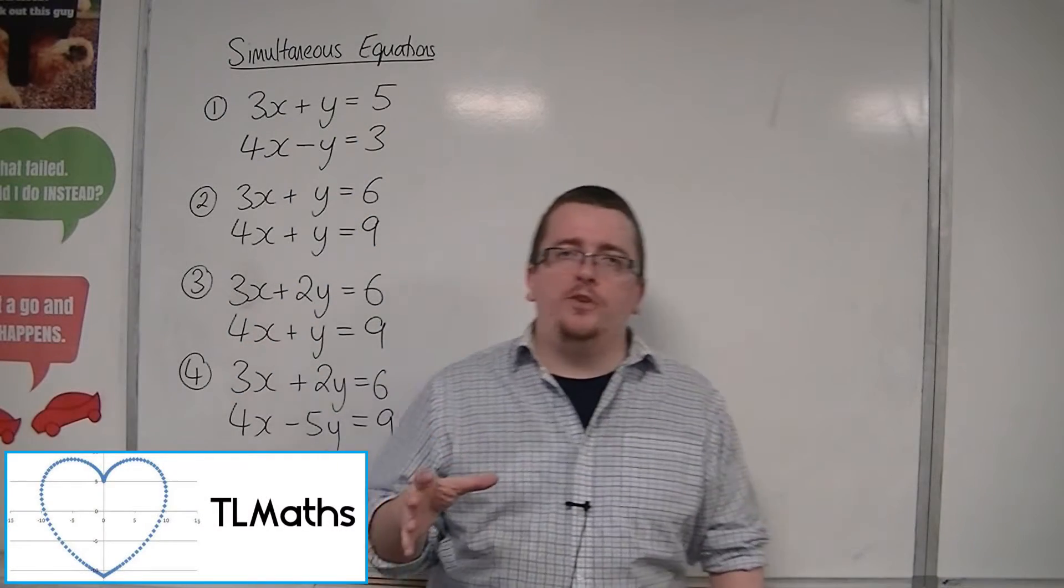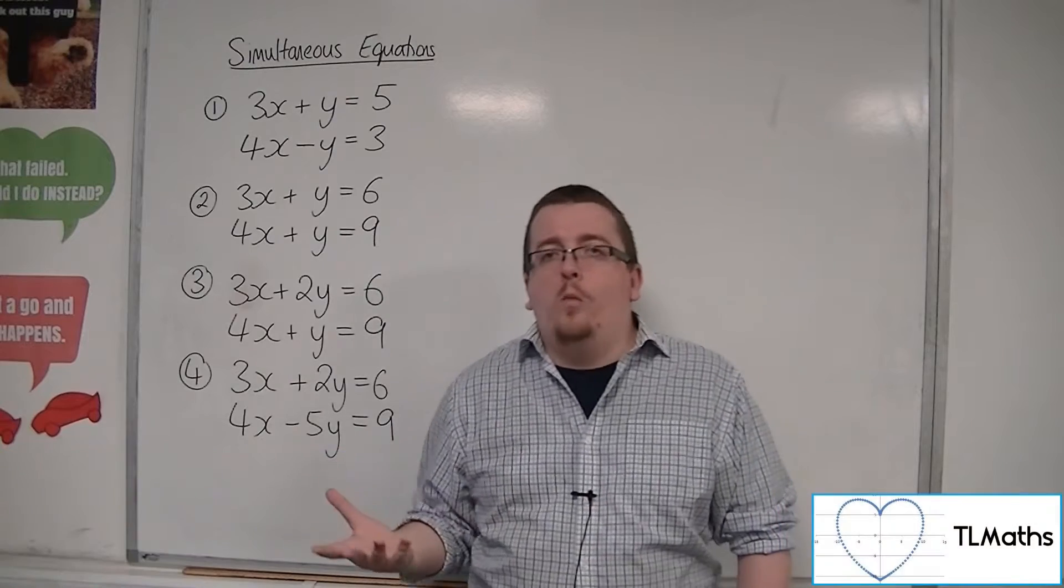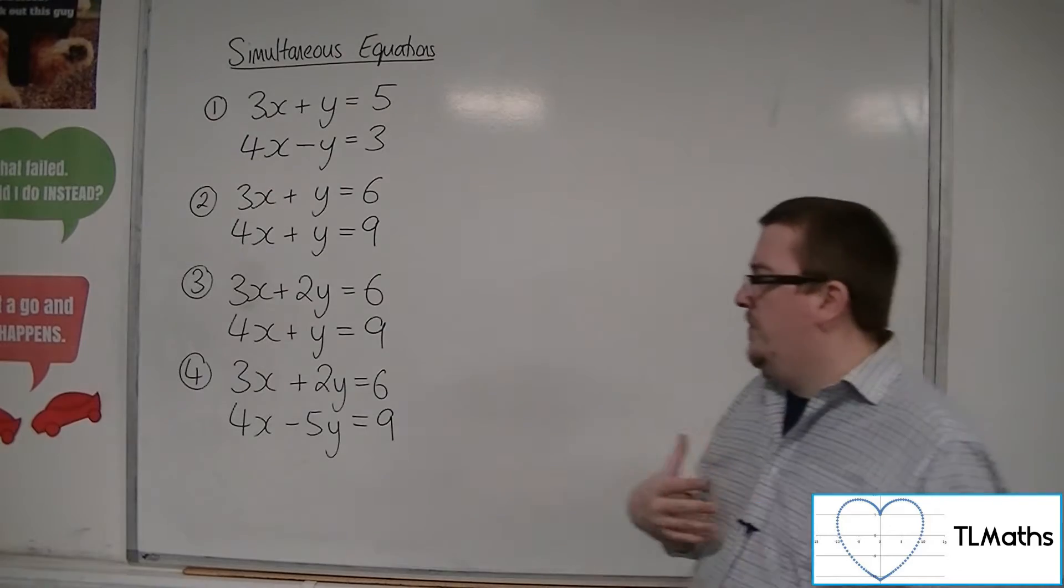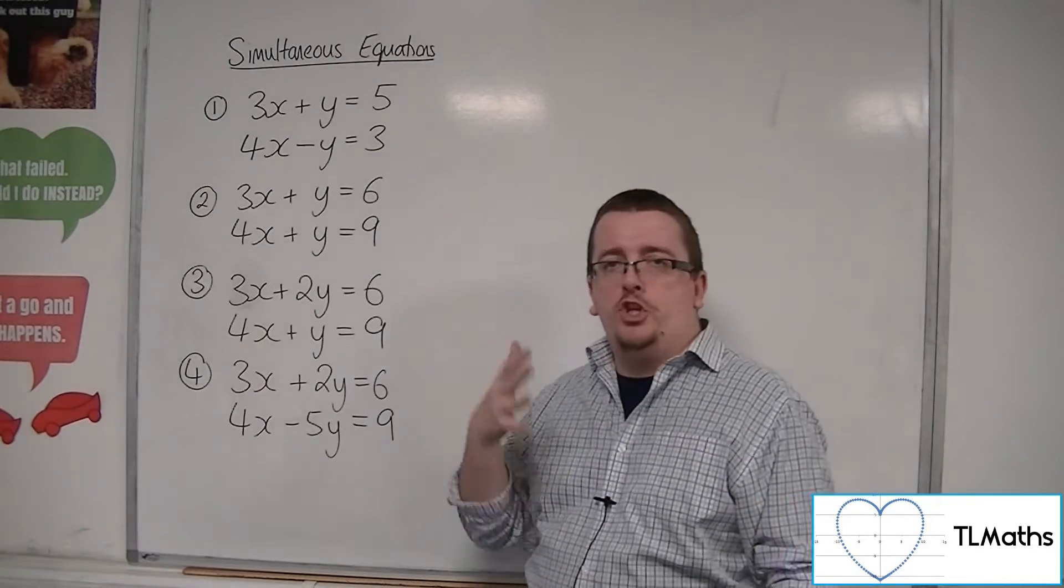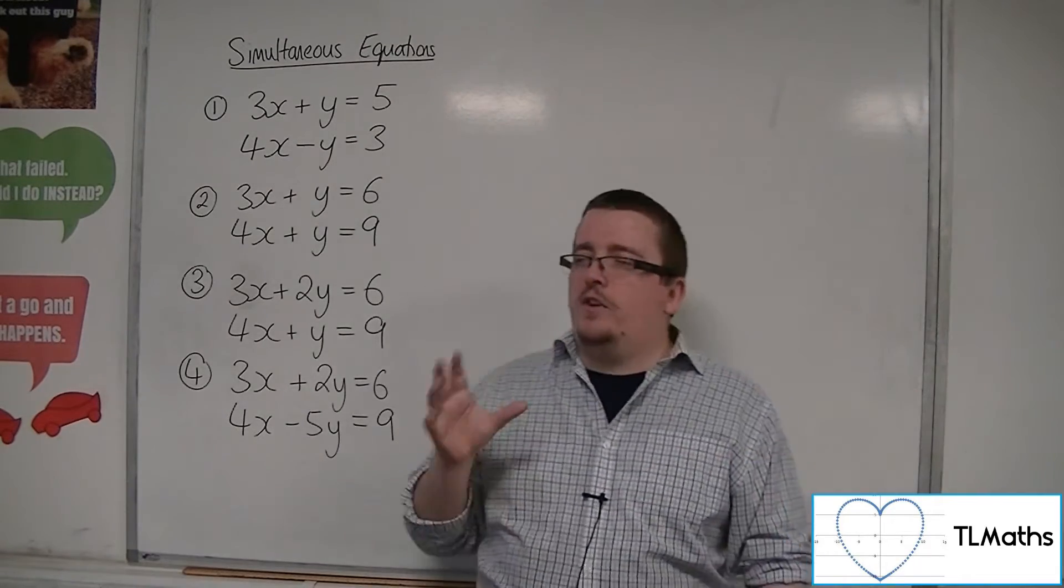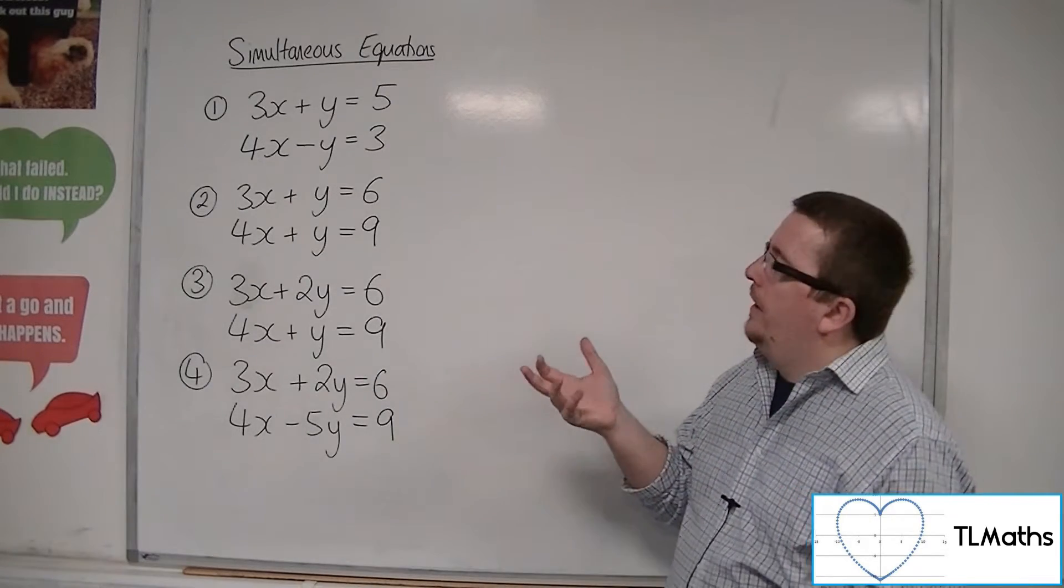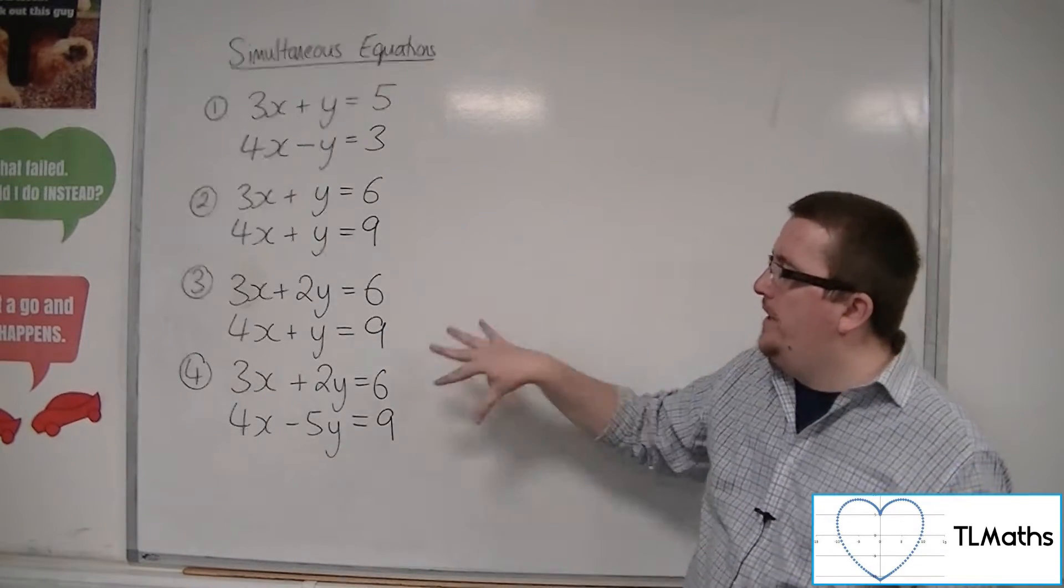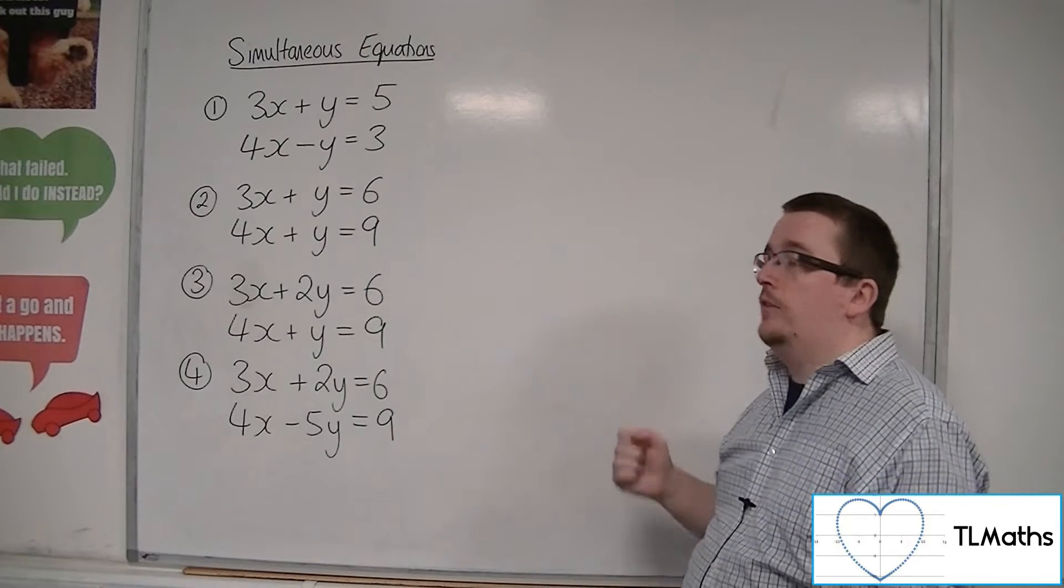For simultaneous equations, the elimination method is really only one we employ when we're working with two linear equations. From then on, we really use some form of substitution to deal with simultaneous equations. So it's kind of an archaic method that is really set up to be used when your linear equations look like this, when they are in pairs like this.